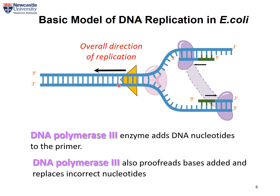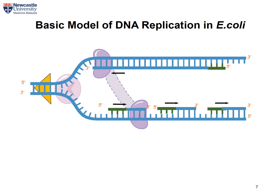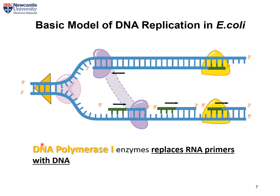Once the genes are unzipped by DNA helicase, DNA polymerase III can start adding complementary nucleotide bases. And always remember, you will only add the nucleotide bases from the 5' towards the 3' direction. At the same time, DNA polymerase III also proofreads the bases to replace the wrong one with the right nucleotides. And not to forget, you also have DNA polymerase I, which will come and replace the RNA primers with DNA molecules.